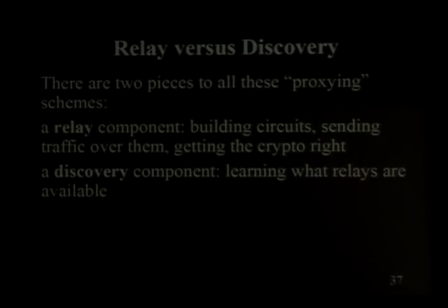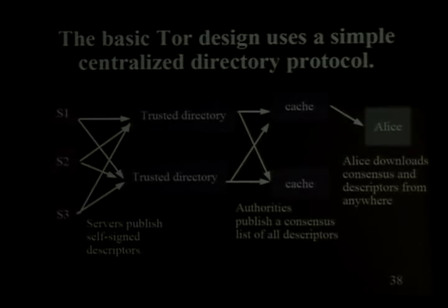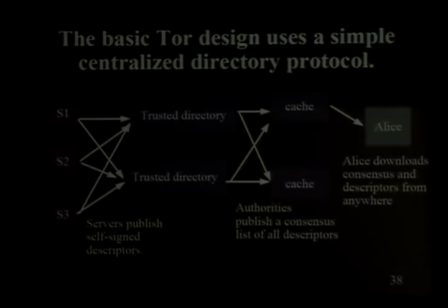Let's take a step back. How do you actually build one of these circumvention tools? There are two components: the relaying component — how do I build my paths, get my encryption right, do flow control — and the discovery component — what do I connect to, how do I learn about the network topology. TOR has a distributed directory system with eight directory authorities, each figuring out its own view of all the relays. Every hour they publish a consensus that all clients get. This ensures all clients have the same view of the network, which is necessary for anonymity — if Alice 1 and Alice 2 have different views, you become partitionable based on path choices.